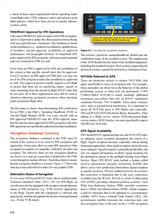GPS signal availability. GPS-based RNAV equipment that uses the DOD GPS relies on adequate signal reception throughout the course of a flight. Signal reception becomes especially critical during instrument approaches when signal reception criteria become more stringent. Signal reception is generally predictable, and you can request information on likely signal reception for the destination airport at the pre-flight briefing from flight service. Many GPS RNAV units include a feature called Receiver Autonomous Integrity Monitoring (RAIM) that allows you to view predictions about future signal reception at specific locations. WAAS-enabled receivers do not have this restriction due to the error corrections available from the WAAS. WAAS is a form of differential GPS (DGPS), providing enhanced position accuracy.